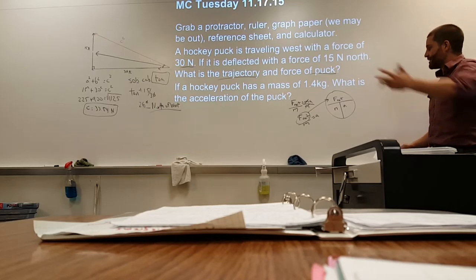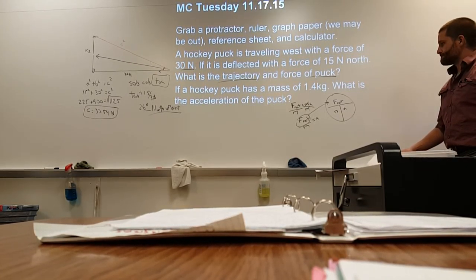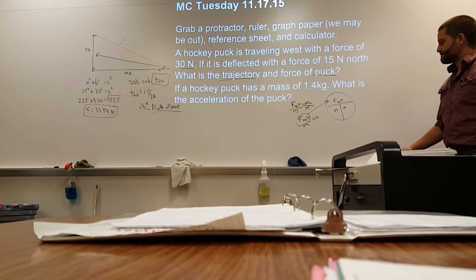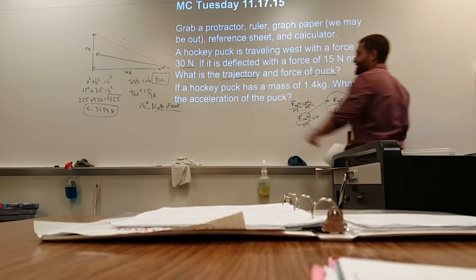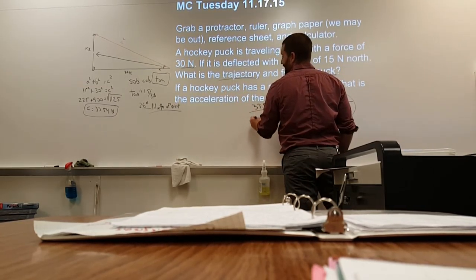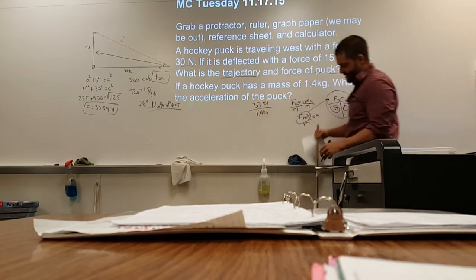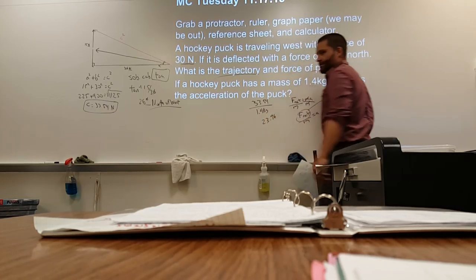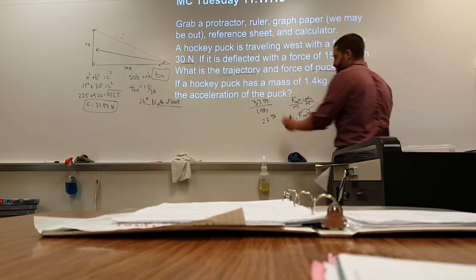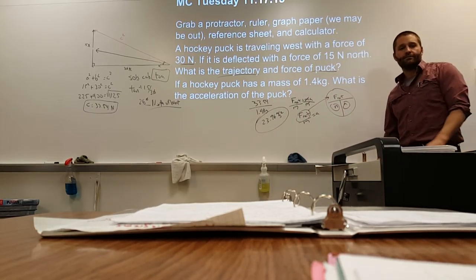So Isaiah, what do I need to do now? The mass is 1.4 kg. I'm trying to find A — acceleration. So I do F net, which is 33.54, divided by my mass of 1.4 kg. When I do that, I get 23.96. Eric, what are my units for acceleration? Meters per second squared. Very good — that's why it's very important to know your units.